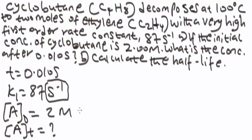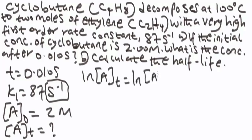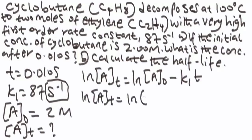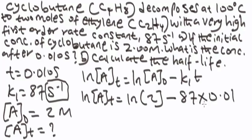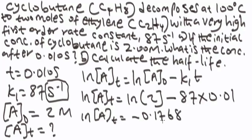We are looking for A_t, the final concentration. Applying the formula: ln(A_t) = ln(A_0) minus k_1 times t = ln(2) minus 87 times 0.010. Simplifying ln(2) minus 87 times 0.01 gives ln(A_t) = minus 0.1768 (to four decimal places).